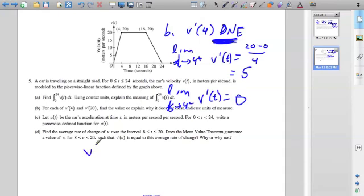Anyway, v prime of 20 we can see does exist, because it's just on a slope.